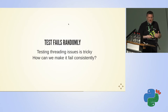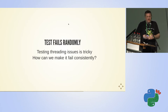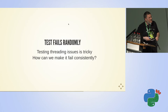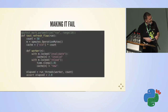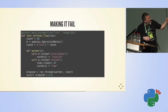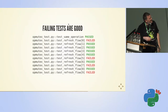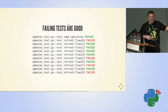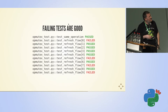How can we make it fail more consistently? This is very easy with PyTest — we can use the PyTest parameterize decorator. Now we are running this test 10 times without changing anything in the code. We can see that it still fails randomly, but our build always fails because we require all tests to pass. So this is an easy way to overcome this issue.